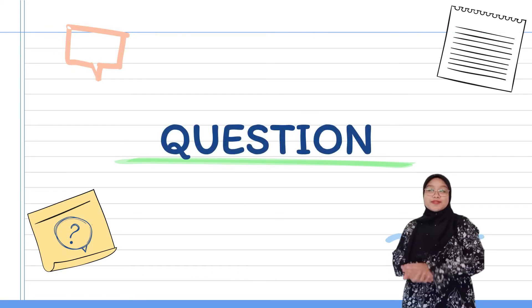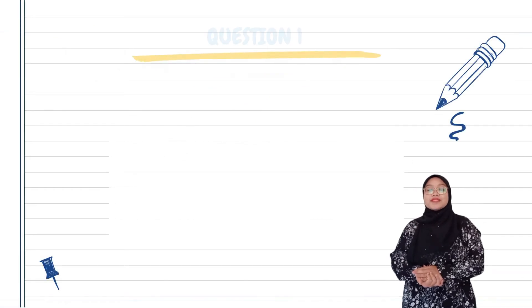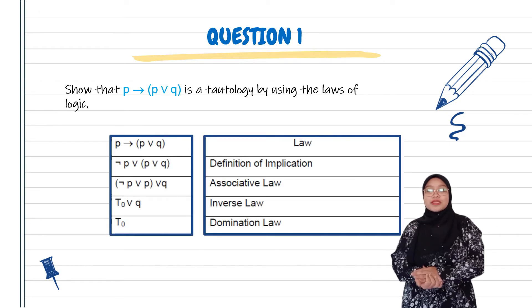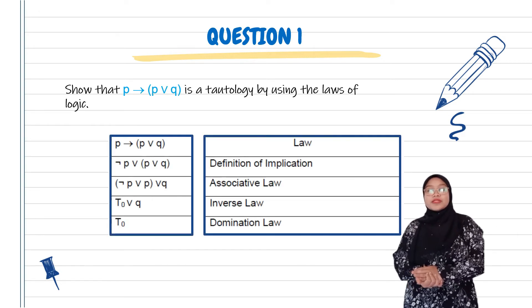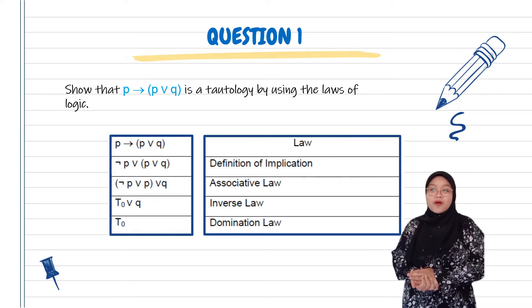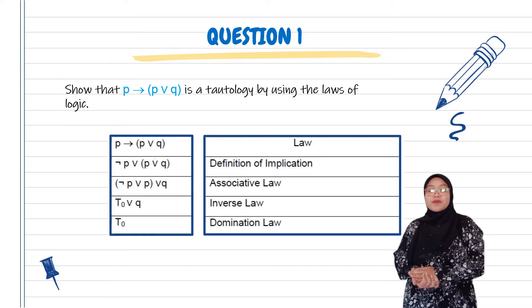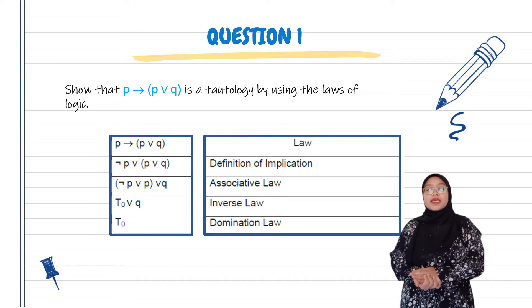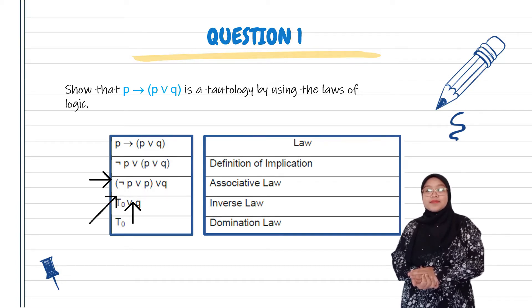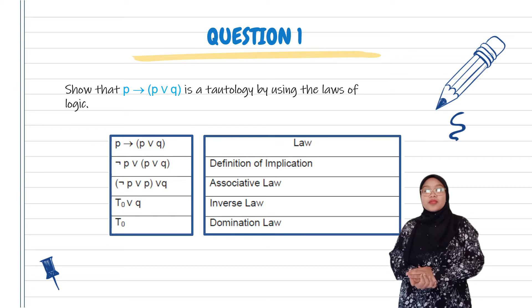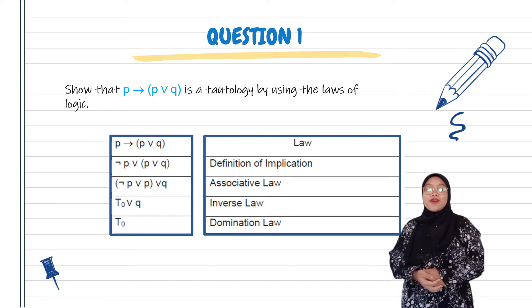To understand more about this topic, let's do some exercises. Example one: show that P implies P OR Q is a tautology using the laws of logic. The first step, we have to use Definition of Implication. We will get NOT P OR (P OR Q). Since we have the same symbol OR, we have to use Associative Law to move P in one bracket. Next step, NOT P OR P will get tautology using Inverse Law. And the last step is tautology OR Q will get tautology using Domination Law.